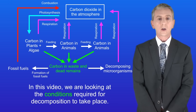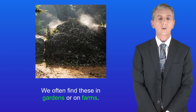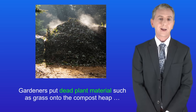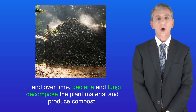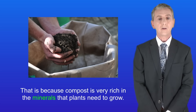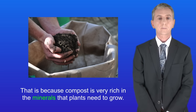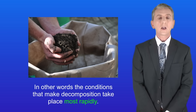In this video we're looking at the conditions required for decomposition to take place. I'm showing you here a compost heap, and we often find these in gardens or on farms. Gardeners put dead plant material such as grass onto the compost heap, and over time bacteria and fungi decompose the plant material and produce compost. Gardeners and farmers then use the compost as a natural fertilizer, because compost is very rich in the minerals that plants need to grow. We're looking at the optimal conditions — the conditions that make decomposition take place most rapidly.